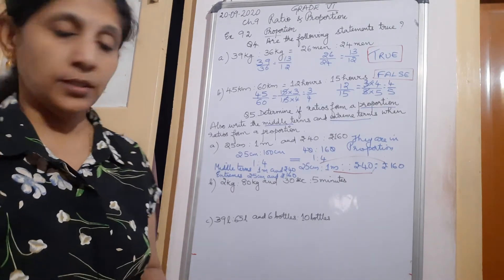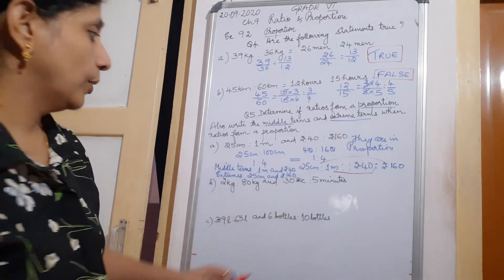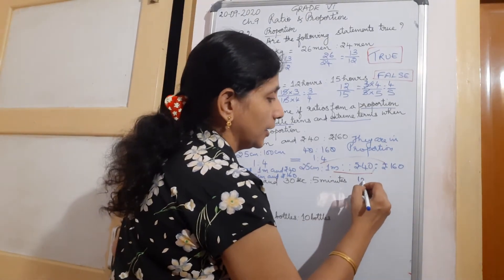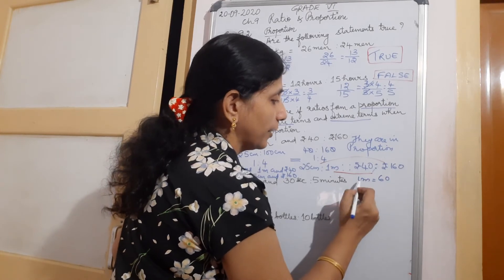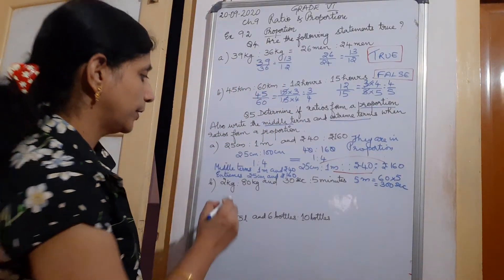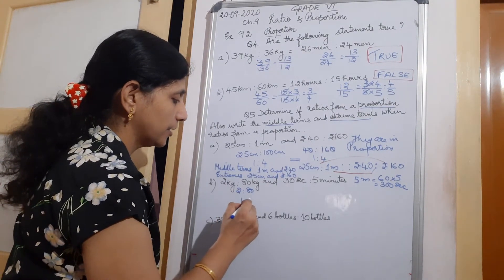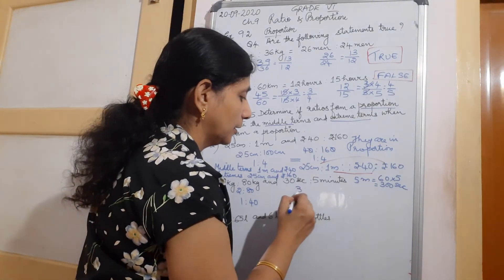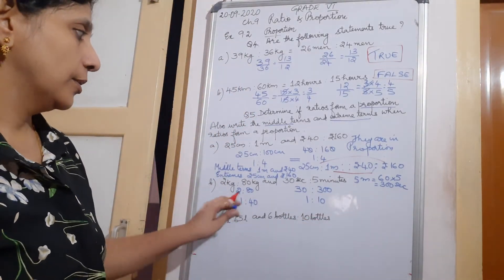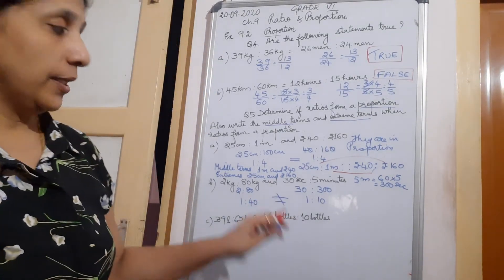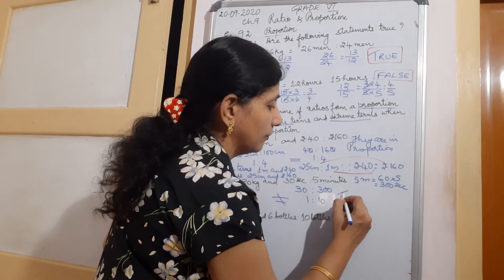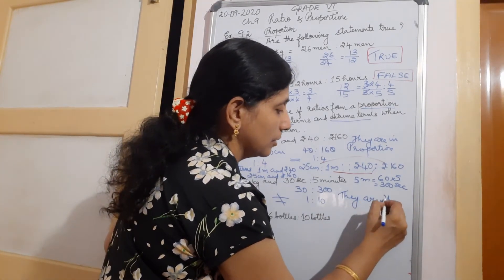Next: 2 kg to 80 kg and 30 seconds to 5 minutes. Here you have to convert 5 minutes to seconds. Since 1 minute equals 60 seconds, 5 minutes equals 5 into 60, that is 300 seconds. So 2 ratio 80 is 1 to 40, and 30 to 300 is 1 to 10. They are not equal, so they are not in proportion. When they are not in proportion, there is no need to find middle terms and extremes.